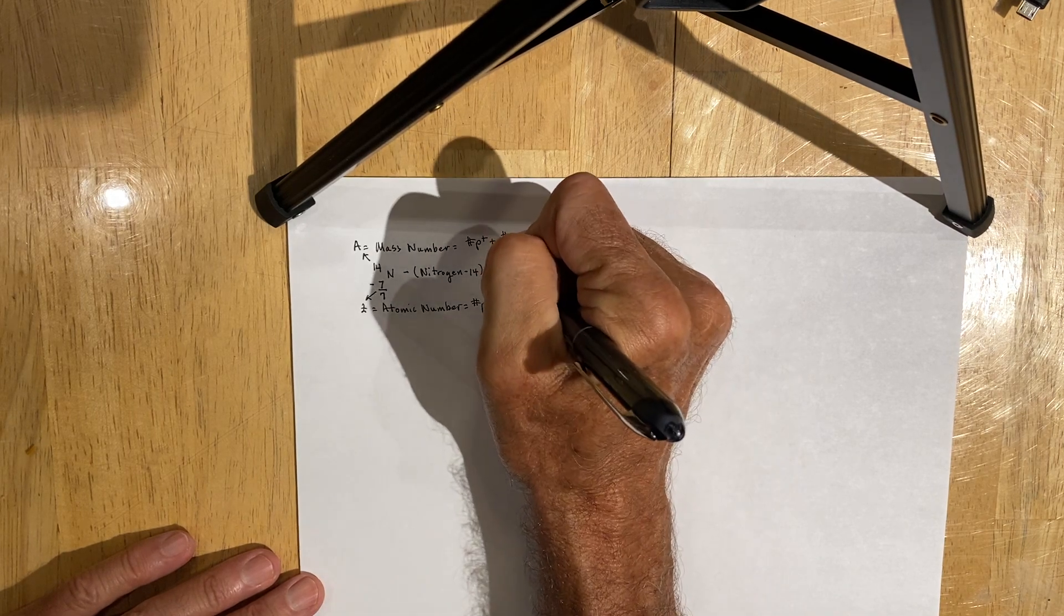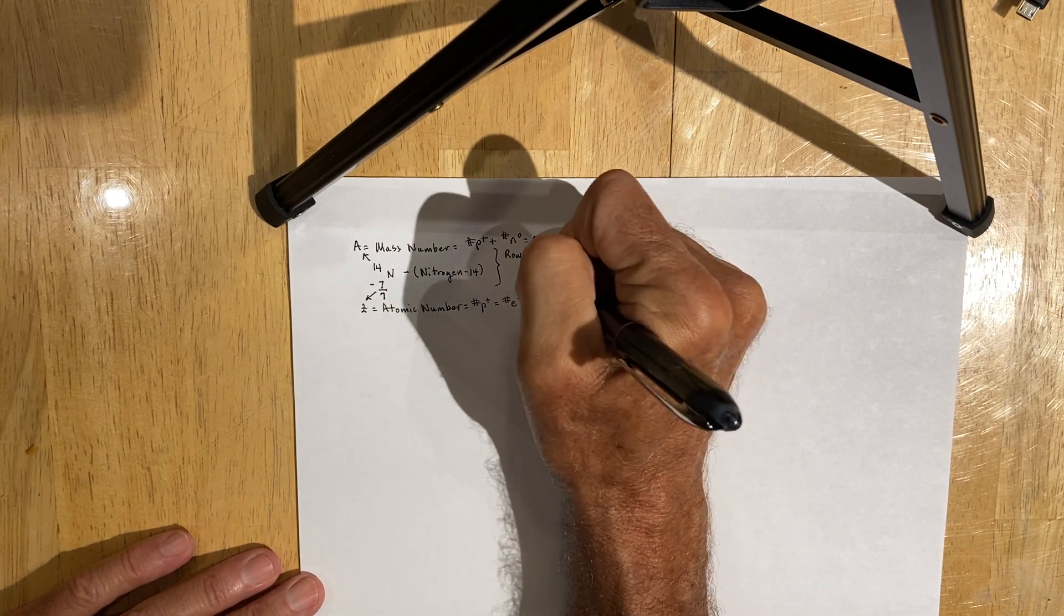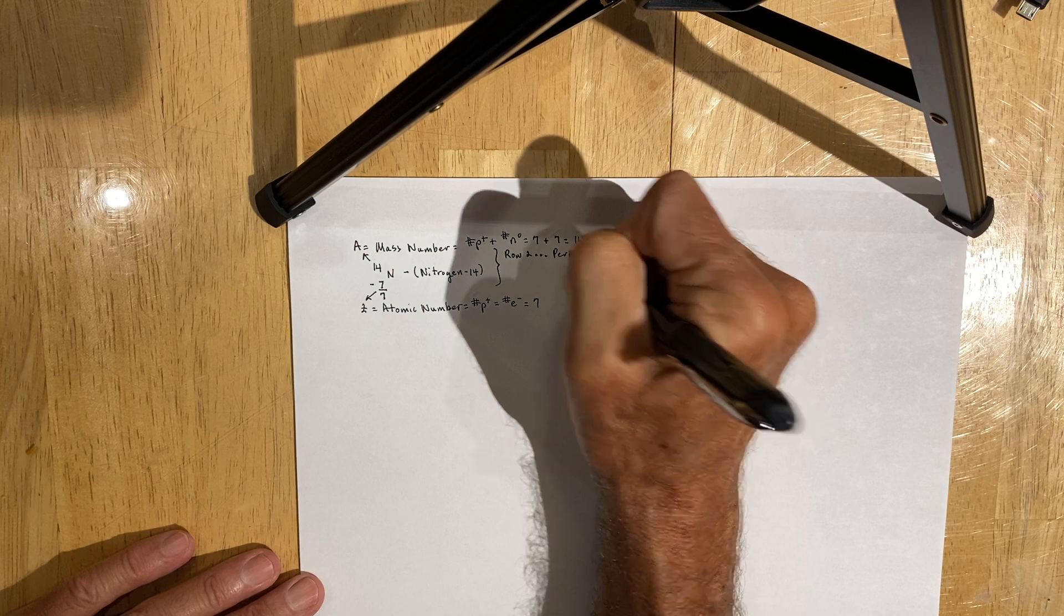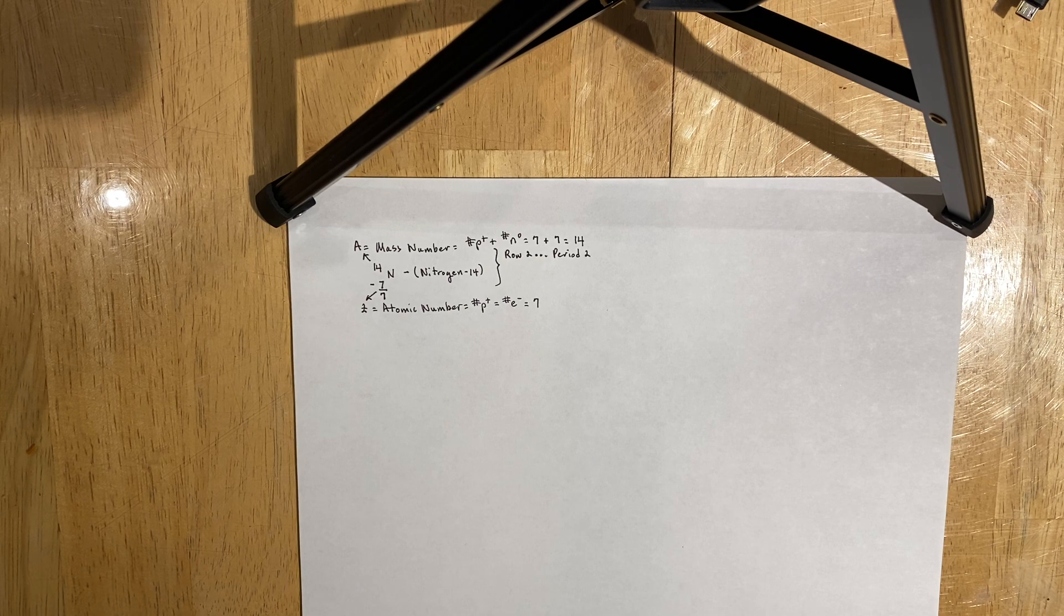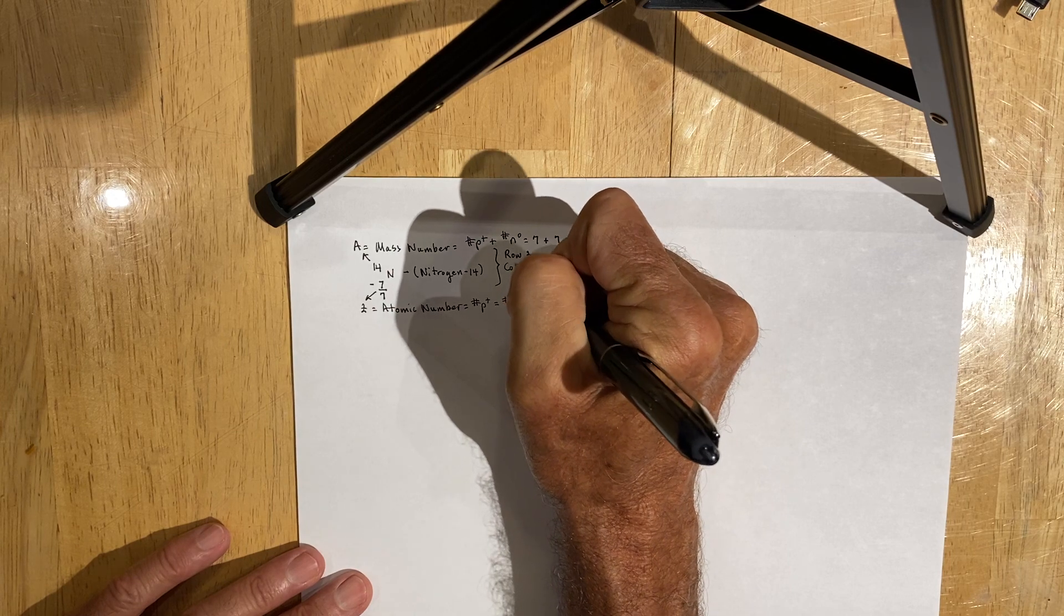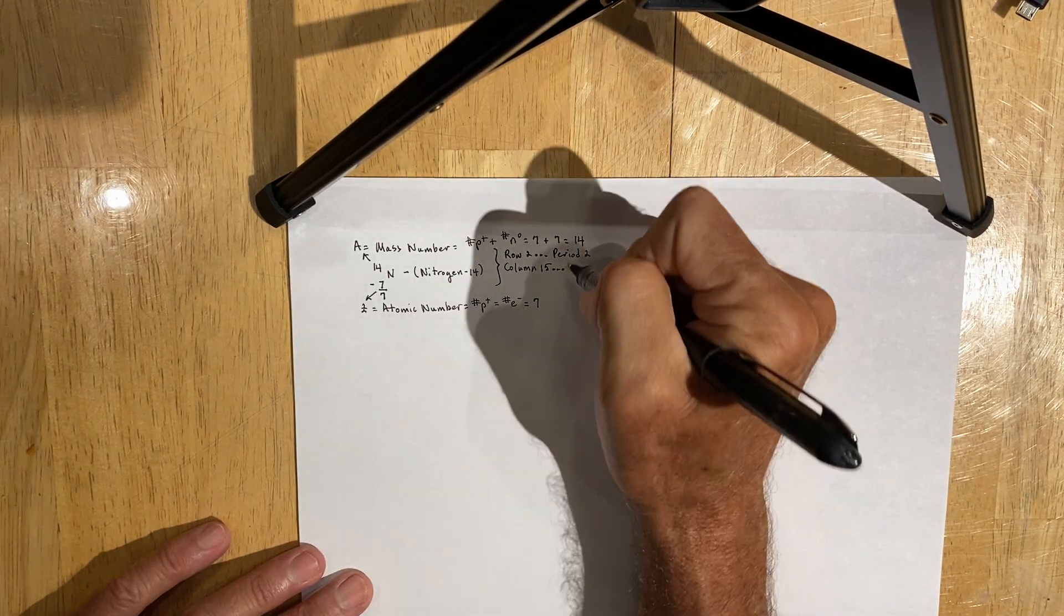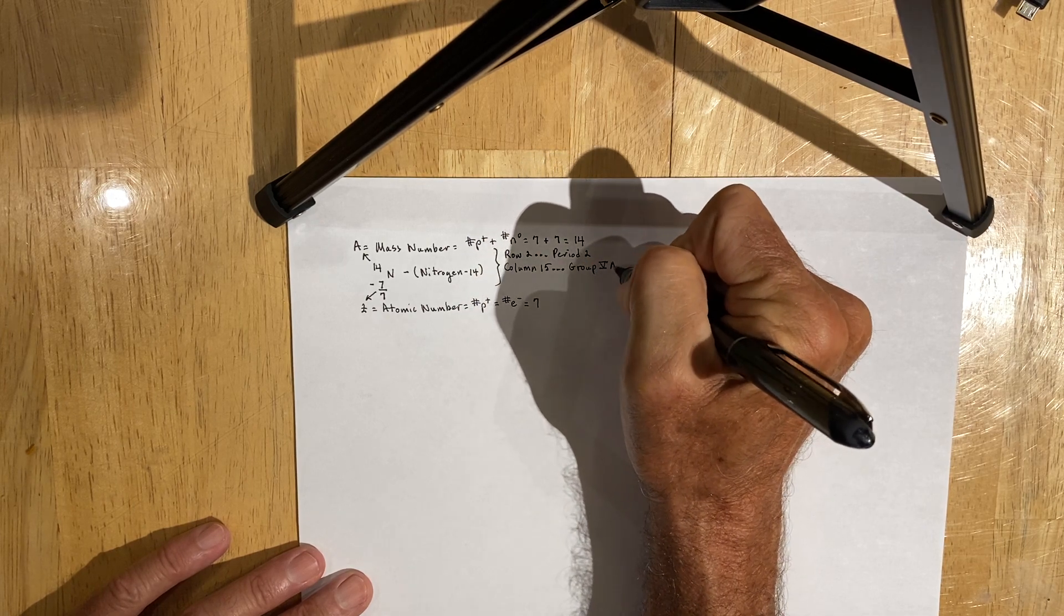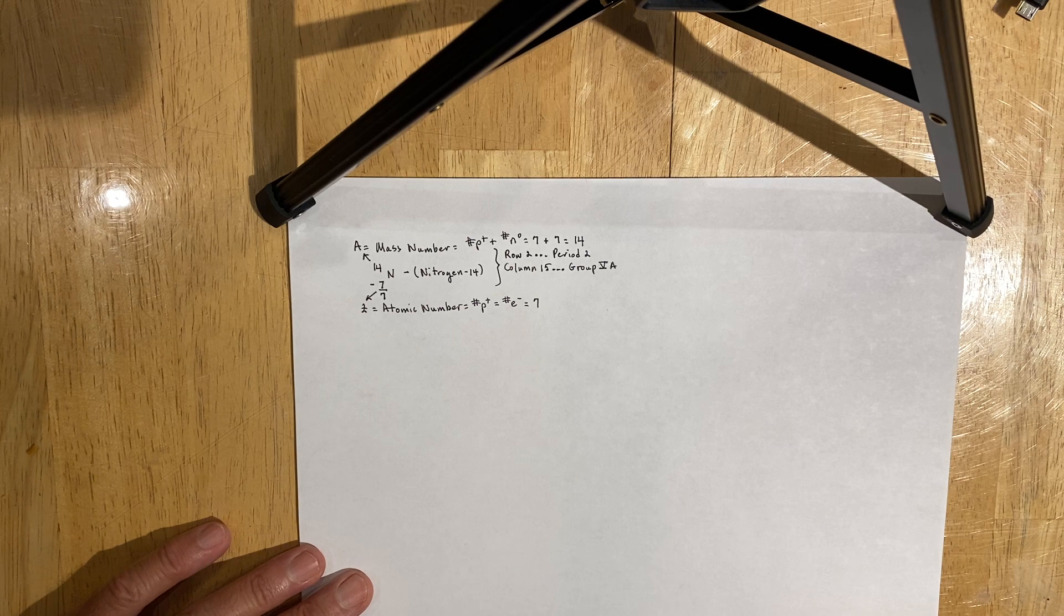It's important to consider the placement of nitrogen on the periodic table. It's a member of Row 2, also known as Period 2, because it has enough electrons to start filling the second energy level of an atom. We also say that it's affectionately positioned in column 15, but more importantly, from my perspective, we say it's a member of group 5A. The Roman numeral gives you insight into how many valence electrons it has, as well as the arrangement of those valence electrons.